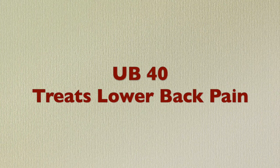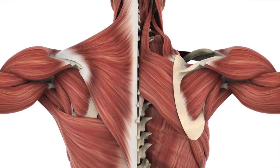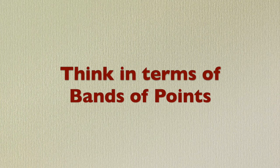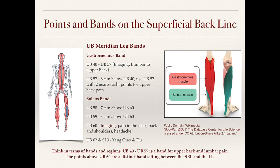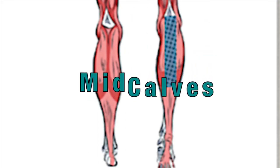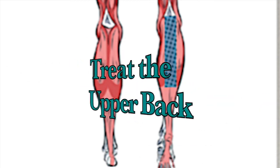UB40 is indicated for lumbar pain, and UB57 is an excellent point for upper back pain, especially in the upper thoracic area between the shoulder blades. For a dowmaw treatment of upper back pain, locate UB57, then palpate a couple cun proximal and a couple cun distal to find two additional sensitive points, and needle those three together — it's a very effective point prescription for upper back pain.